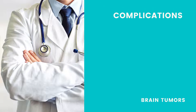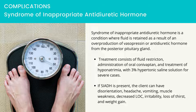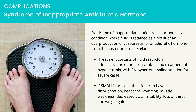Complications — Syndrome of Inappropriate Antidiuretic Hormone (SIADH): SIADH is a condition where fluid is retained as a result of overproduction of vasopressin or ADH from the posterior pituitary gland. SIADH occurs when the hypothalamus has been damaged and can no longer regulate the release of ADH. Treatment consists of fluid restriction, administration of oral conivaptan, and treatment of hyponatremia with 3% hypertonic saline solution for severe cases. If SIADH is present, the client can have disorientation, headache, vomiting, muscle weakness, decreased level of consciousness, irritability, loss of thirst, and weight gain. If severe or untreated, this condition can cause seizures and coma.